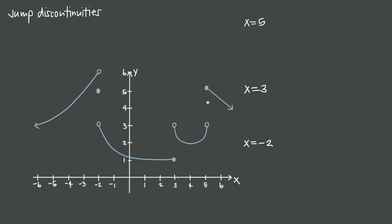What we want to remember right off the bat about jump discontinuities is that the general limit of the function at a jump discontinuity will never exist. The limit doesn't exist at the jump discontinuity because when we have a big break like this, the left-hand limit and the right-hand limit are never going to be equal to each other. In order for the general limit to exist, the left-hand limit and the right-hand limit both have to exist and be equal to one another.